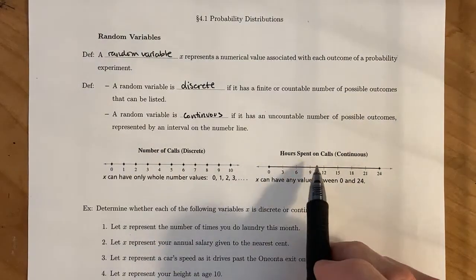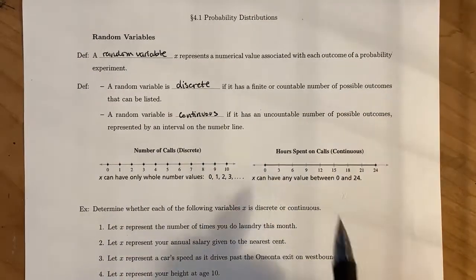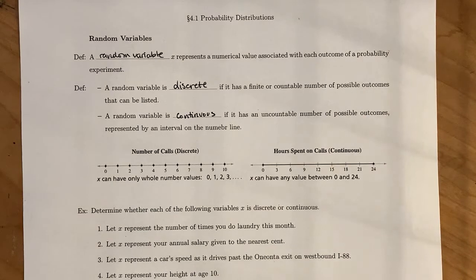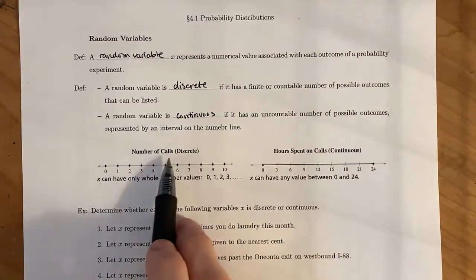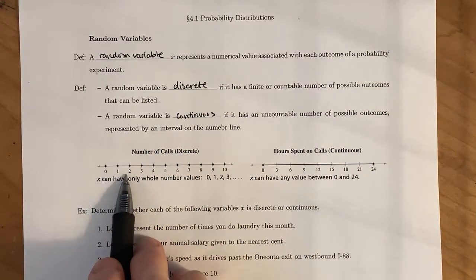Whereas the hours spent on a phone call is an example of a continuous random variable because you could be on the phone for one minute or two hours, pretty much any time between zero hours up to 24 hours the whole entire day on the cell phone. So since you can be anywhere in between zero and 24 that's going to be continuous. Whereas discrete is whole number jumps.